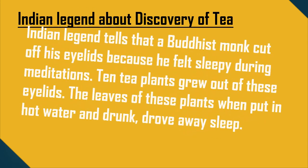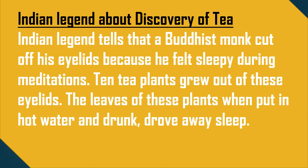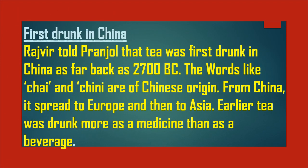Indian legend about the discovery of tea: the Indian legend tells that a Buddhist monk — Bodhidharma — cut off his eyelids because he felt sleepy during meditation. Ten tea plants grew out of these eyelids, and the leaves of these plants, when put in hot water and drunk, drove away sleep. Tea was first drunk in China as far back as 2700 BC. The words 'chai' and 'chini' are of Chinese origin. From China it spread to Europe and then to Asia. Earlier, tea was drunk more as a medicine than as a beverage.